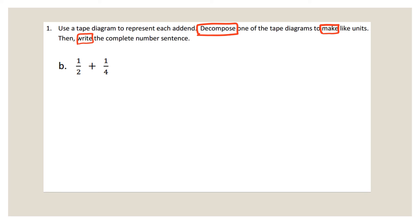So we have to use a tape diagram to represent each addend — and remember, addends are the two numbers that we're adding together. We have to decompose, which means to break down, one tape diagram to make like units. And then we're writing the complete number sentence. Those are the important things to remember as we go about solving this problem.